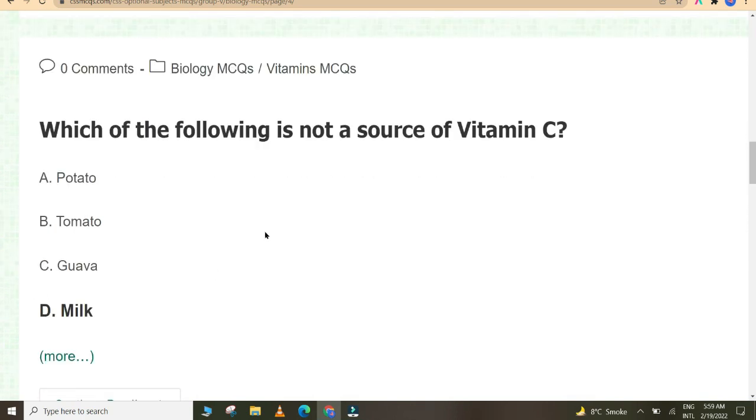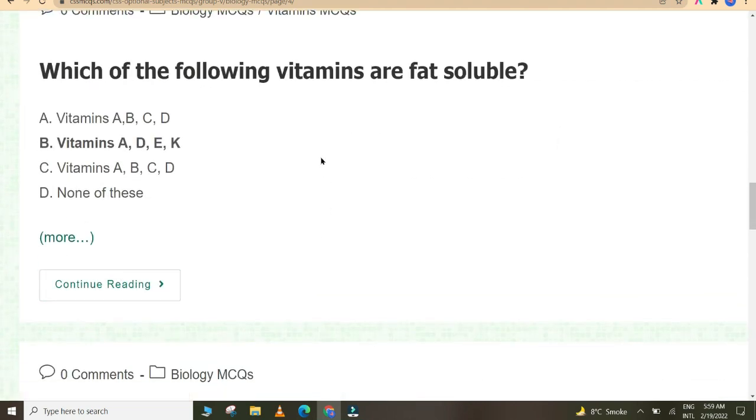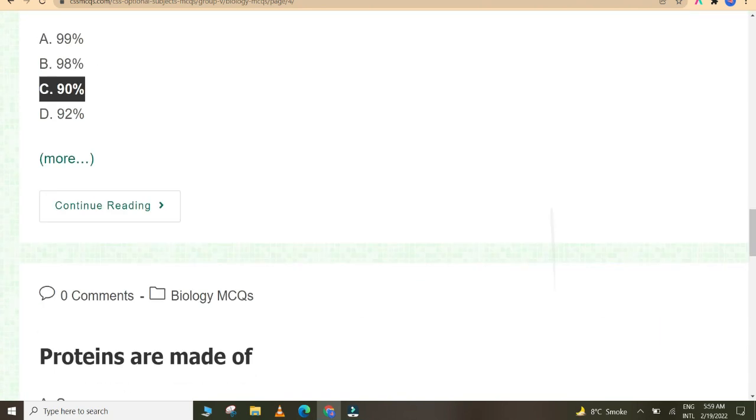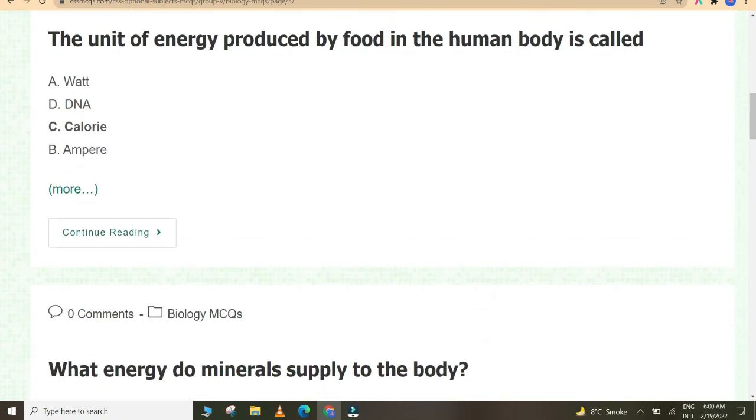Chlamydomonas is a small plant. Food possesses chemical energy. Which of the following vitamin helps in clotting of blood? Vitamin K. Which of the following is not a source of vitamin C? Milk. Which of the following vitamins are fat soluble? Vitamins A, D, E, and K.